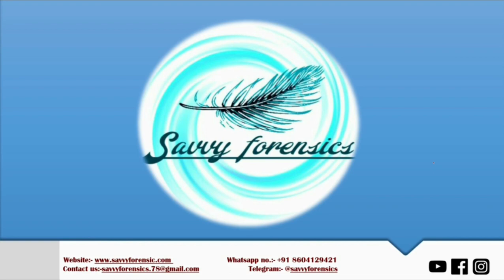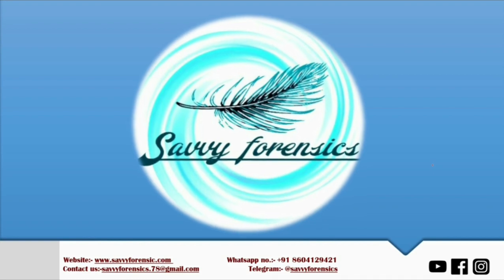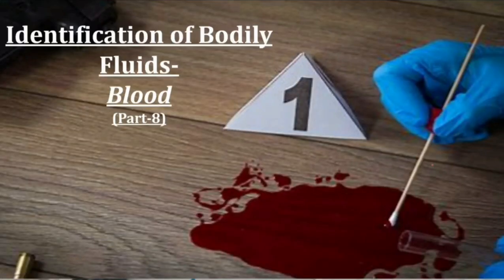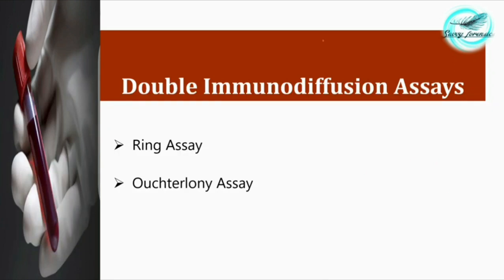Welcome back to Savvy Forensics. This is the fourth part of the identification of bodily fluids — specifically blood. In this video we'll be talking about the double immunodiffusion assays. In the previous video we completed the immunochromatographic assays for species identification of blood. Now we'll look at the second technique: the double immunodiffusion technique, through which we can determine the species of a blood stain or other biological fluid.